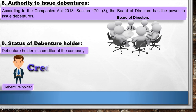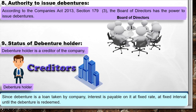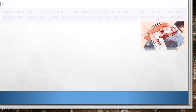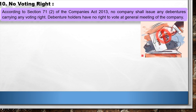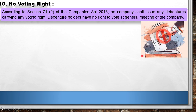9. Status of Debenture Holder: Debenture holder is a creditor of the company. Since debenture is a loan taken by the company, interest is payable at a fixed rate at fixed intervals until the debenture is redeemed. 10. No Voting Right: According to Section 71, Subsection 2 of the Companies Act 2013, no company shall issue any debentures carrying any voting right. Debenture holders have no right to vote at the general meeting of the company.